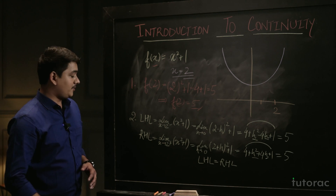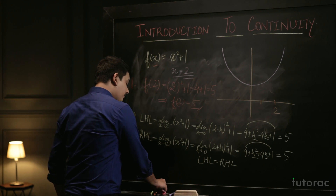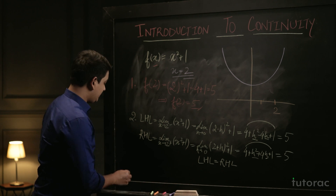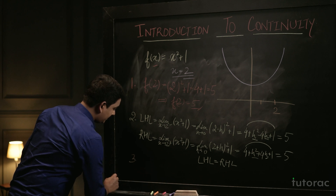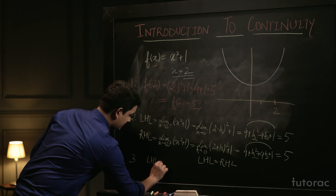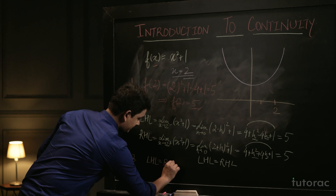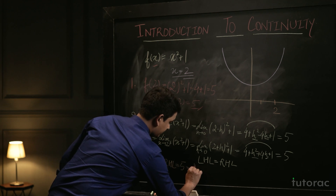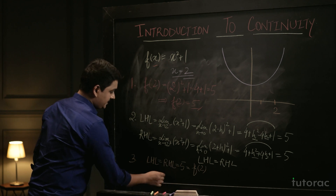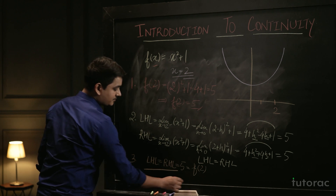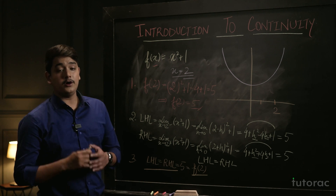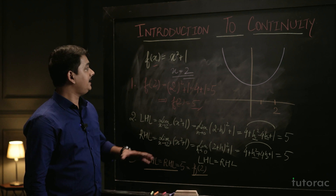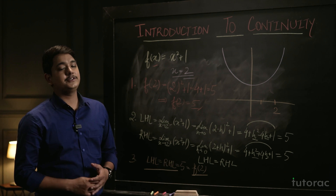The third condition is that the limit of the function should equal the value of the function at that point. Here, LHL = RHL = 5, which is also equal to f(2). This means the limit equals the value of the function at that point. All three conditions are satisfied, so the function is continuous at x = 2.